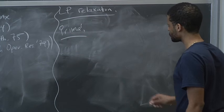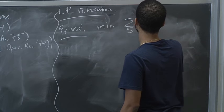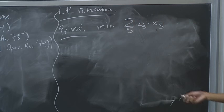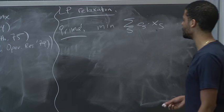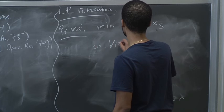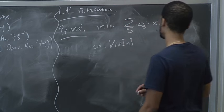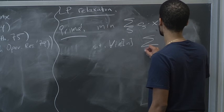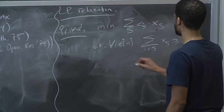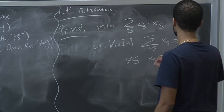In the primal, we want to minimize the sum over S of CS times XS, where XS is 1 if you take the set, 0 otherwise. Subject to: for all i from 1 to N, you need that the sum over sets containing i of XS is at least 1, and that for all S, XS is at least 0.